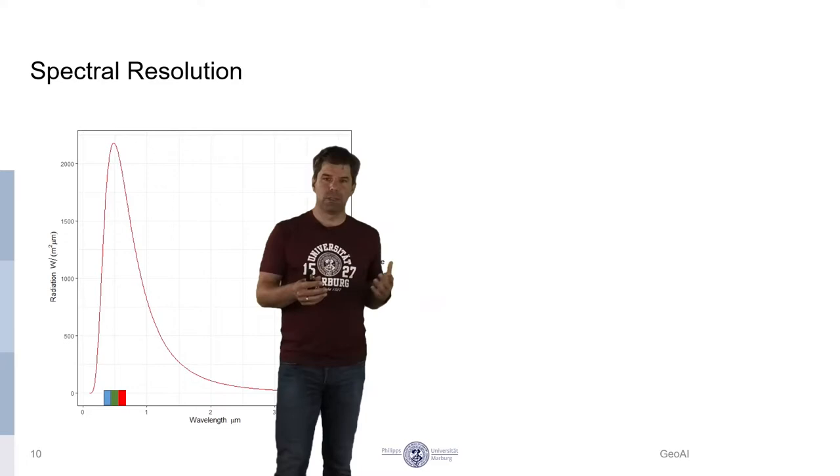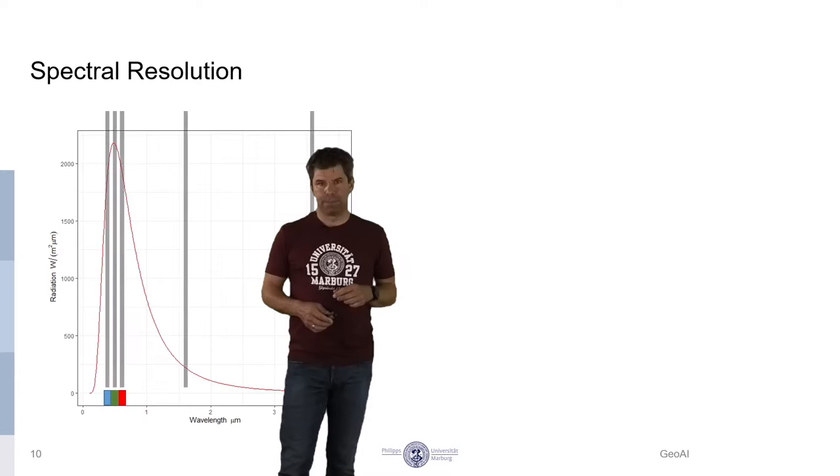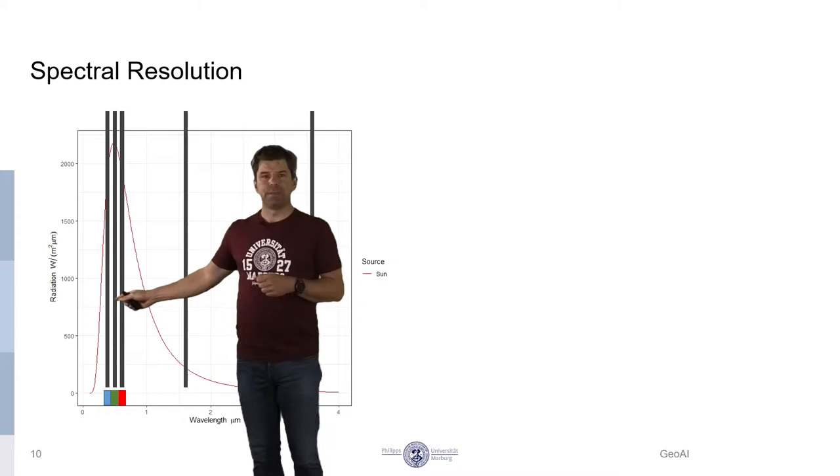A typical sensor, satellite sensor or sensor on a drone and so forth, has more than one band or more than one channel. It consists of several of these channels here.